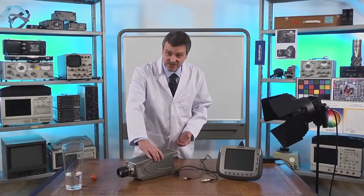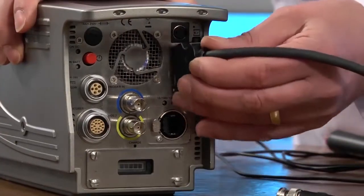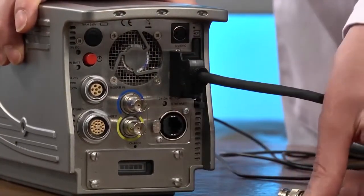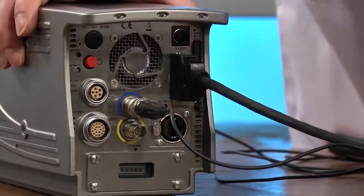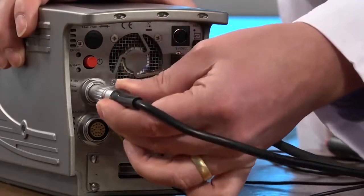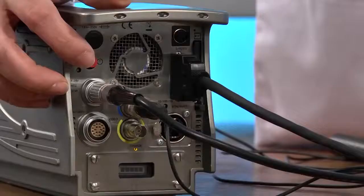Now I'll put on the connectors at the back of the camera. First the controller display unit, second the trigger, and third the power connector. All I have to do now is switch the camera on.